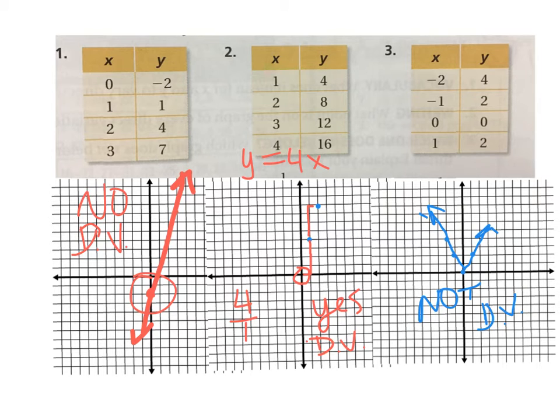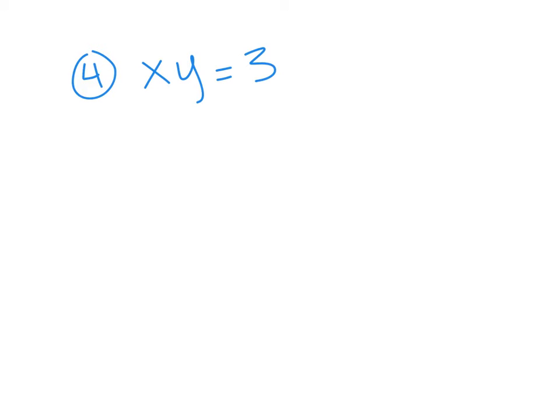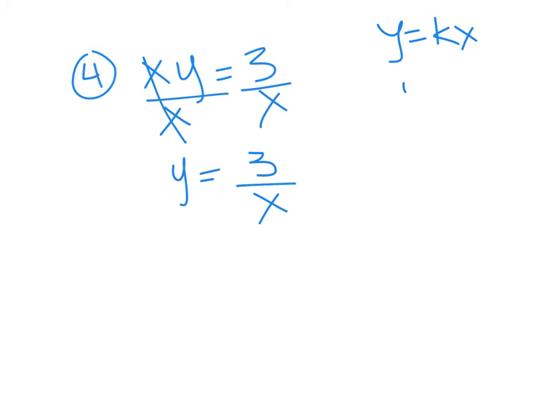Maybe you should graph all the points just in case. Number four, they've given us xy equals 3. In order to get this into direct variation form, we need to get y by itself. It's multiplication, so we divide by x. That gives y equals 3 over x. Is that written in direct variation format? No. Direct variation should be y equals kx. In this case, we have y equals k over x. So no, this would be not direct variation.